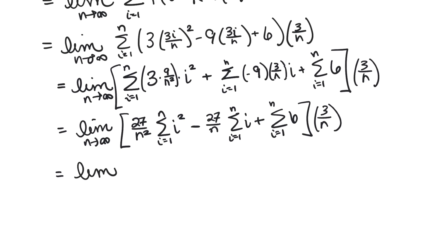And now we're going to replace those sums with the formulas that we have for them. So we keep the 27 over n squared and we have a formula for the sum i goes from 1 to n of i squared, and that's n times (n plus 1) times (2n plus 1) over 6. Minus 27 over n and now we have a formula for the sum of i and that is going to be n times (n plus 1) over 2. And then we know if we add up 6 n different times we get 6n.